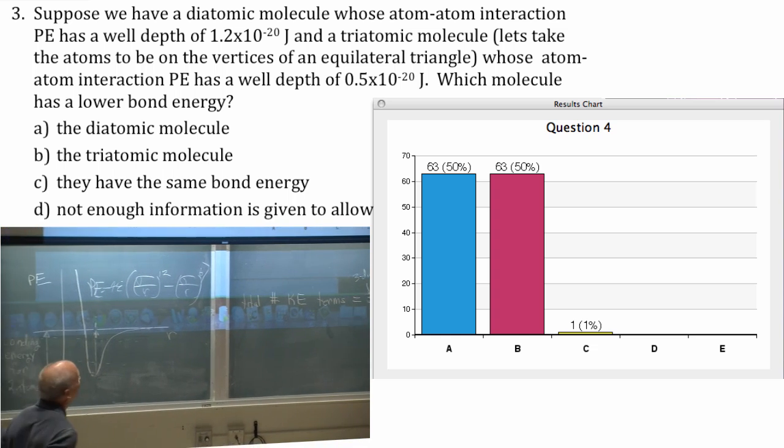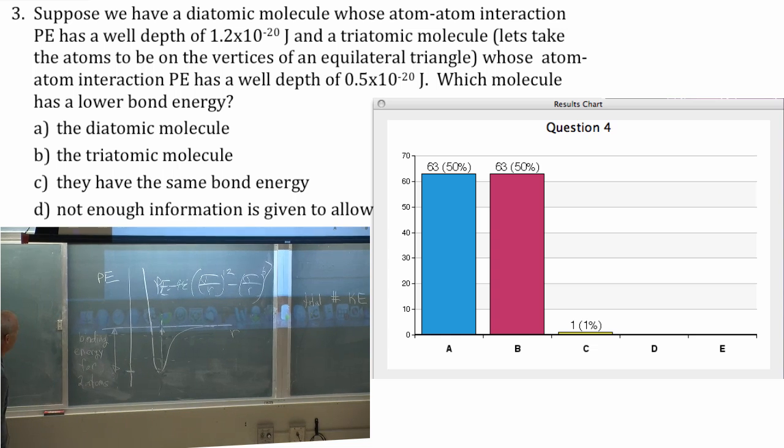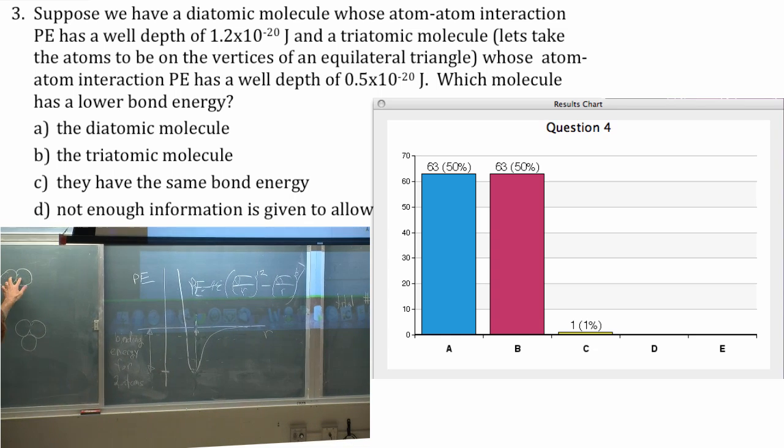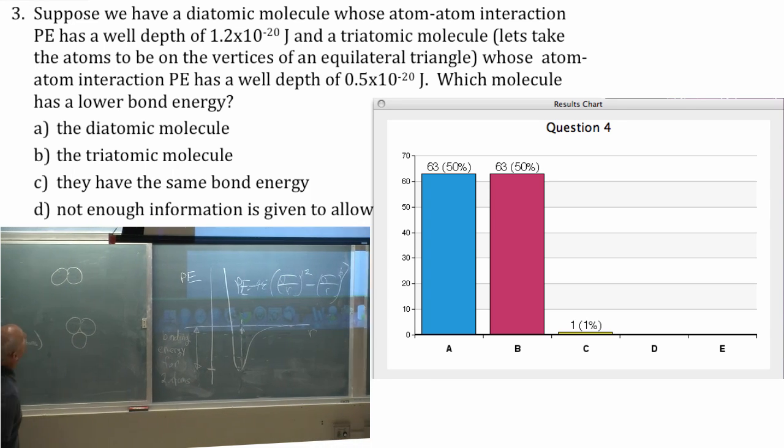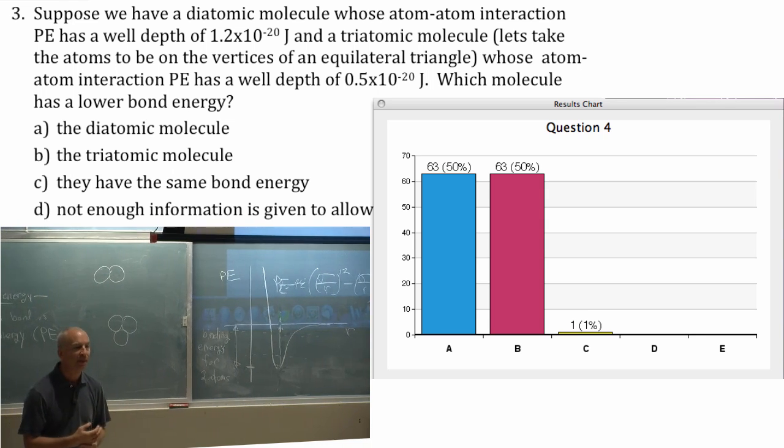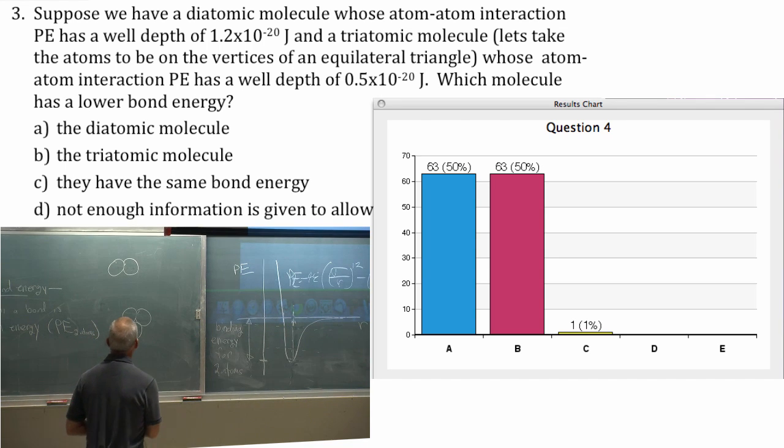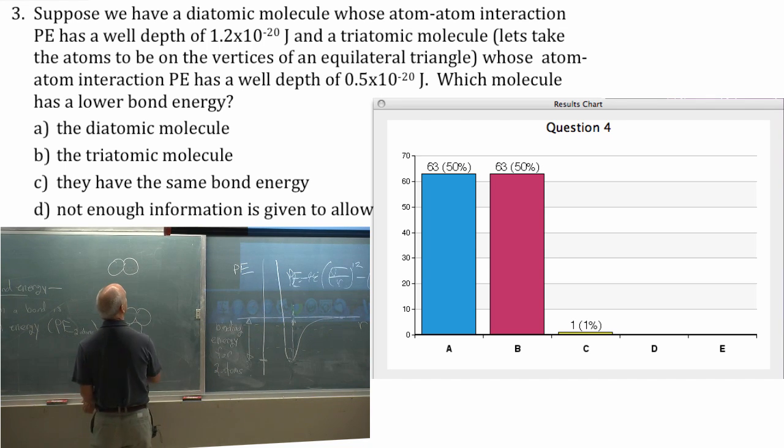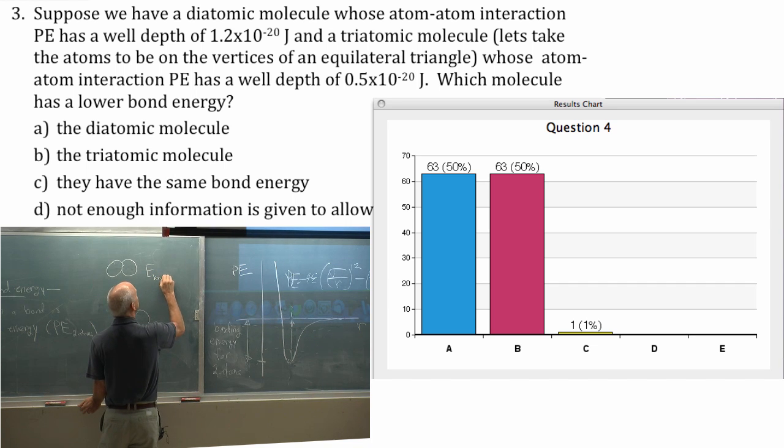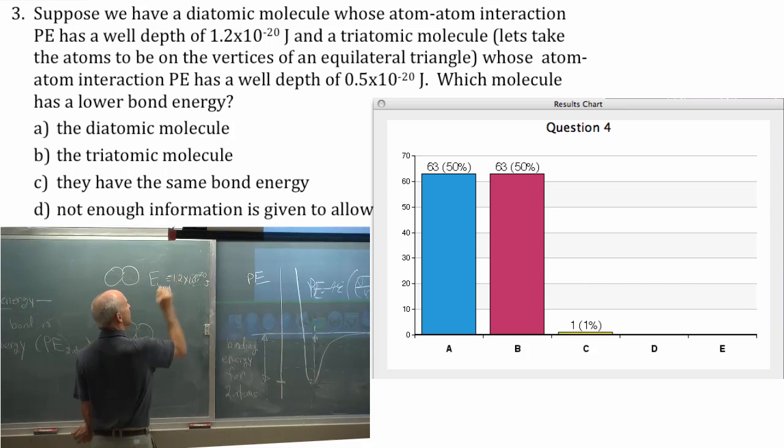They ignored the 1%. It's rounding error. So atom-atom bond 1.2 times 10 to the minus 20th is the depth of the well. So when this two thing forms it gives off an energy of 1.2 times 10 to the minus 20th joules. Its bond energy when it's formed is 1.2 times 10 to the minus 20th joules. It's negative of that.